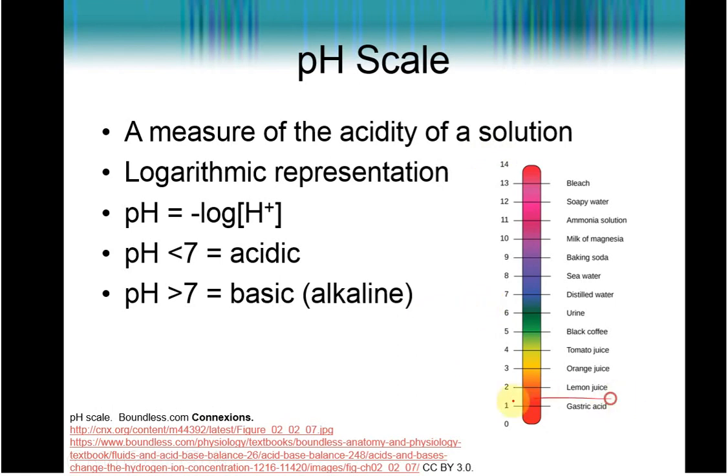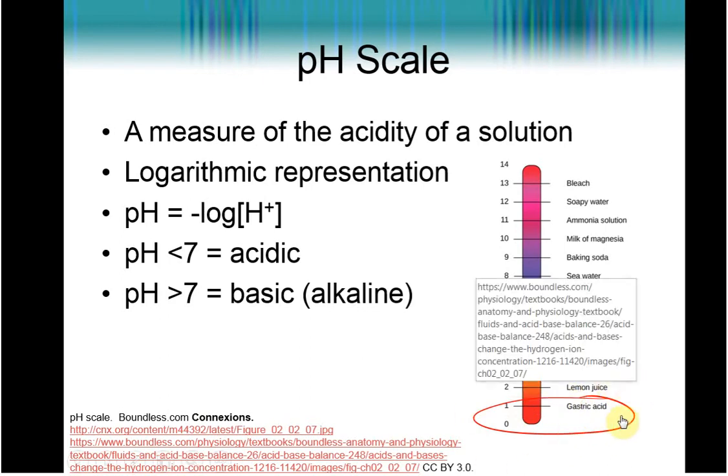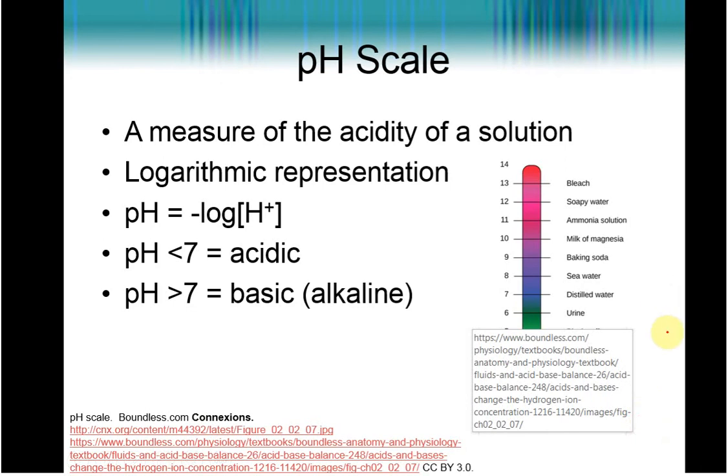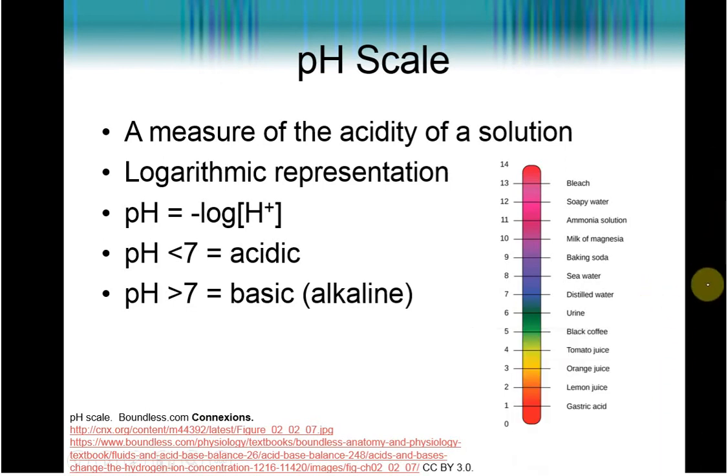Now our stomach acid, our stomach pH is about pH of 1 with lemon juice and orange juice above that at 2 and 3, which is why you're not supposed to drink straight lemon juice, not that you would want to, but it will eat away at the enamel on your teeth. Coffee is technically slightly acidic, which is why you can have dental problems if you drink too much coffee without brushing your teeth more often. Urine is also slightly acidic.